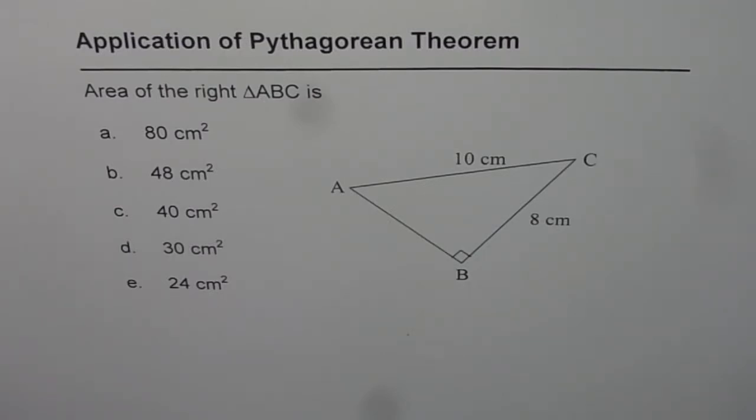I hope this question will help you understand Pythagorean theorem better. The question is: area of the right triangle ABC is? We are given 5 choices.